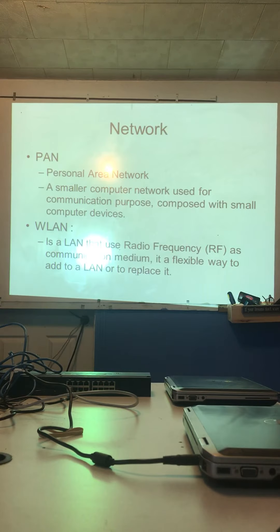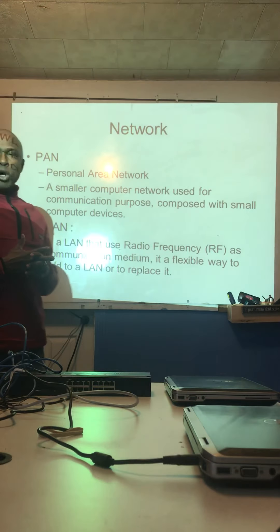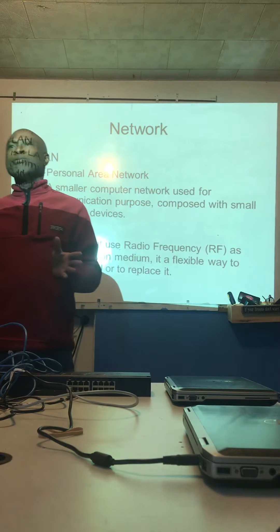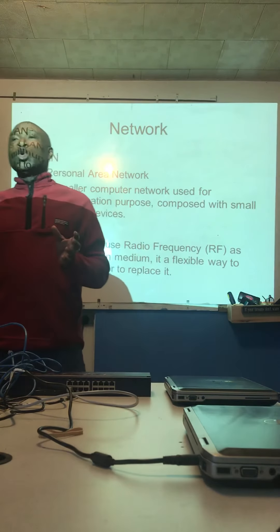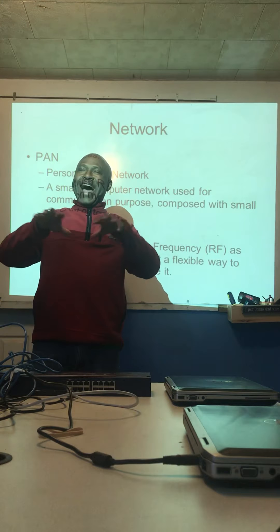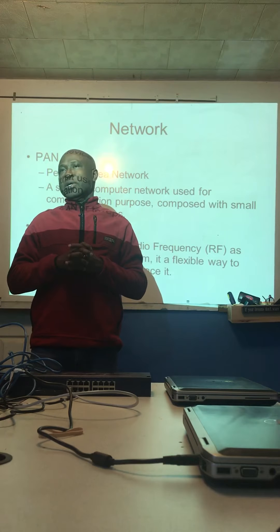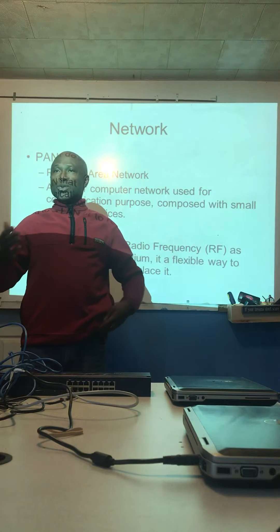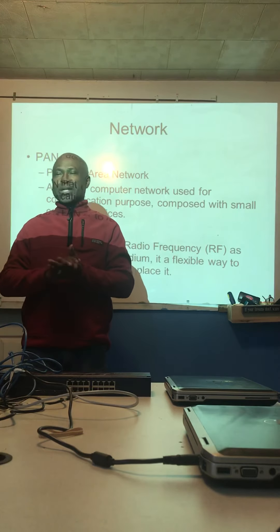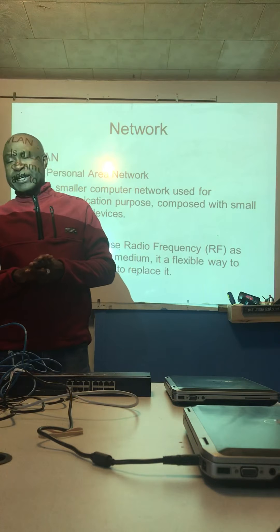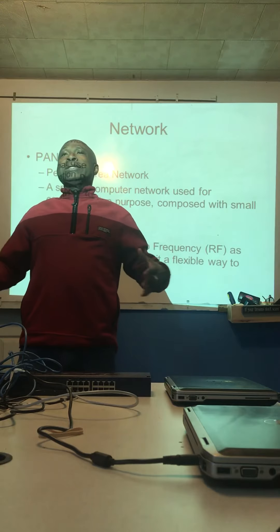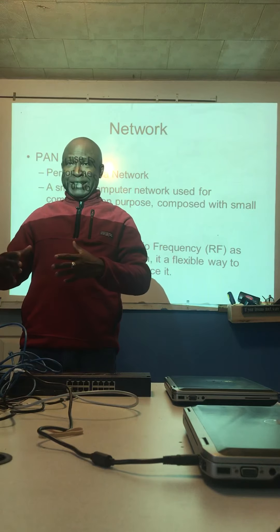A wireless local area network is a LAN that uses radio frequency as a communication medium. For this type of network, it's easy to install because you don't have to run any cable. You just put a wireless access point, and automatically when you walk in the area covered by your access point, it will assign an IP address to your device and you will be able to use the internet or network connection.